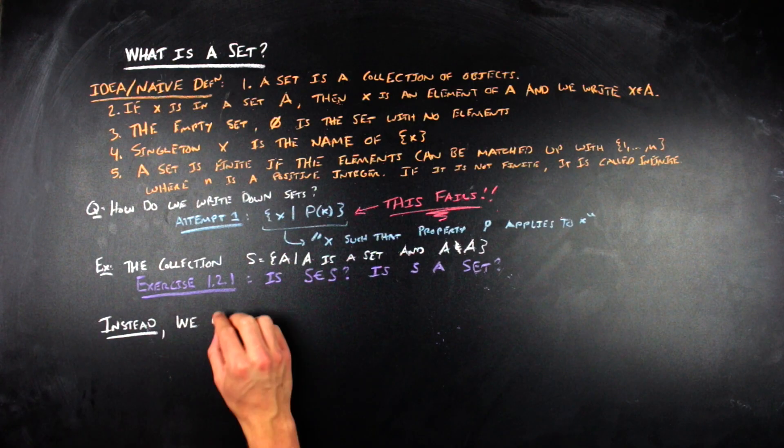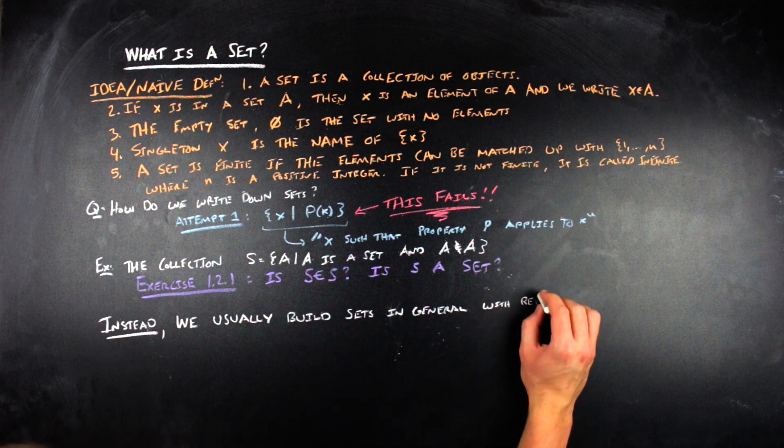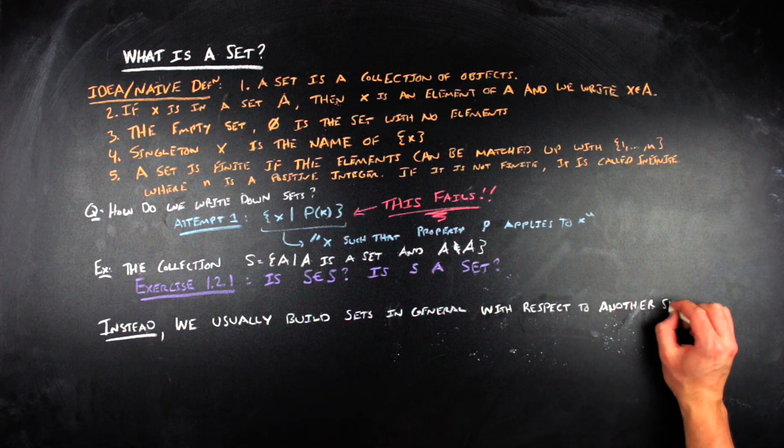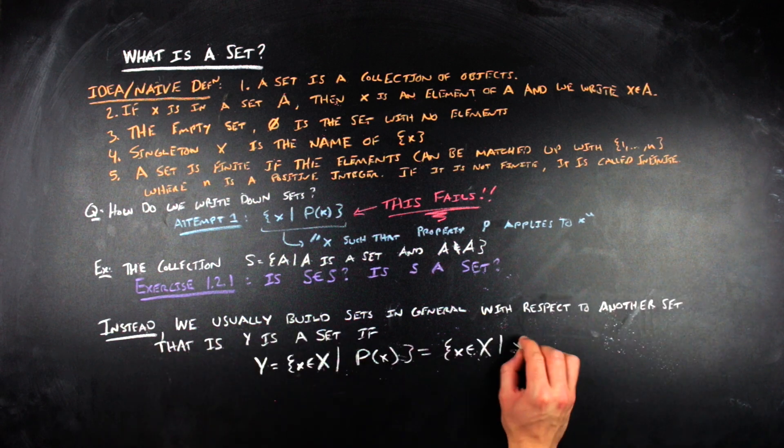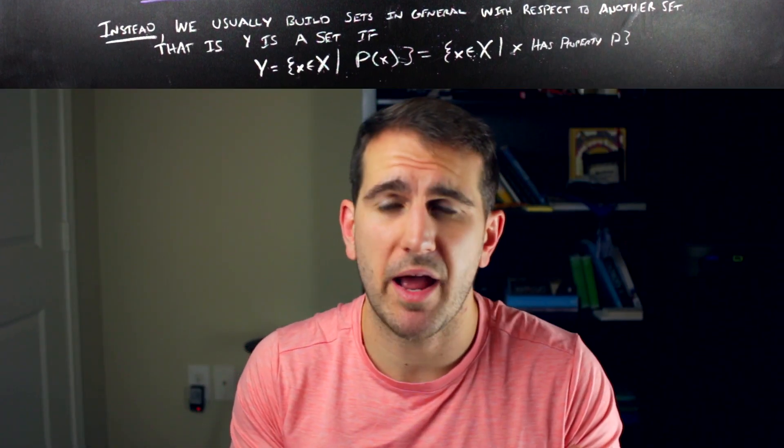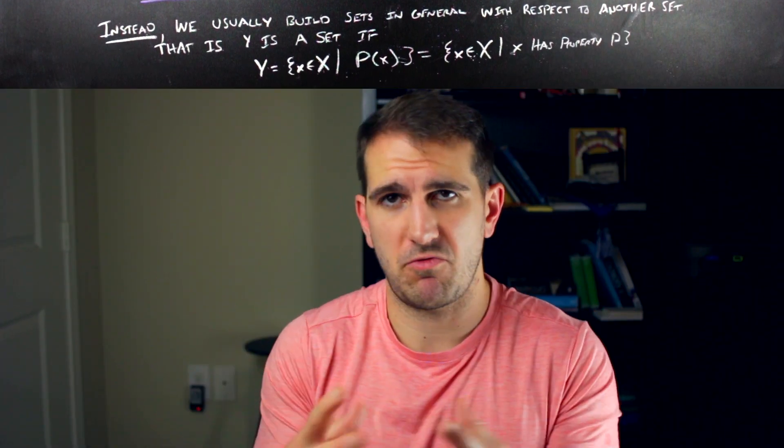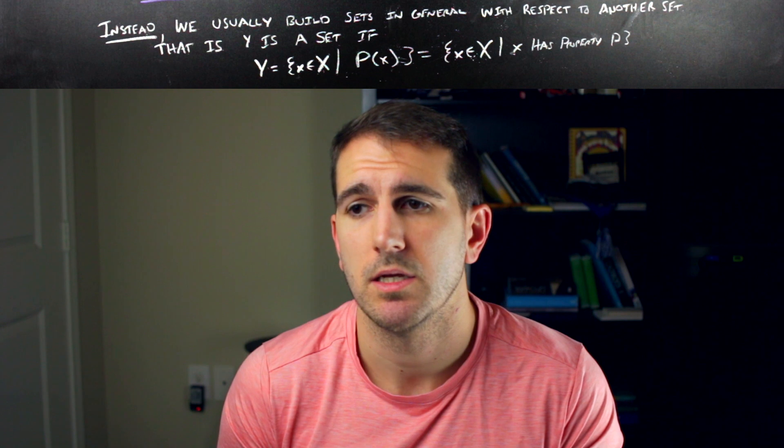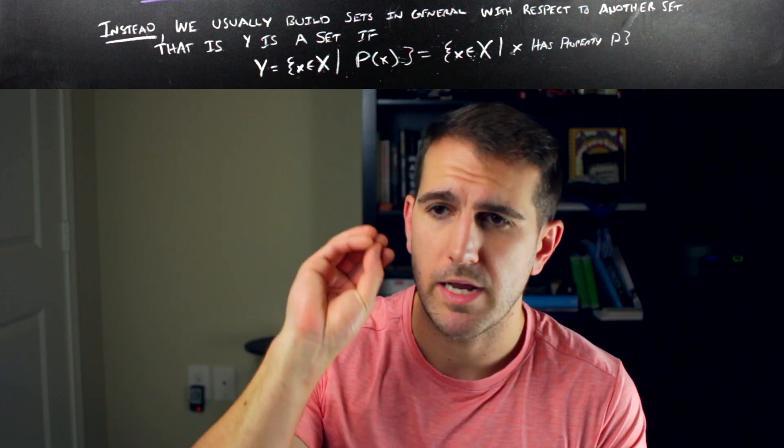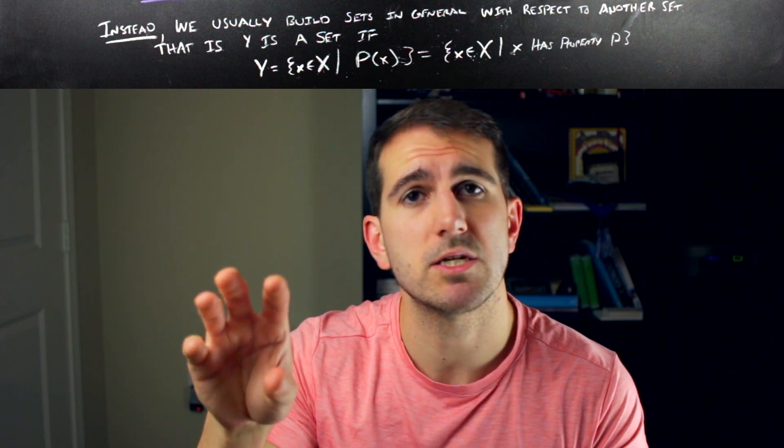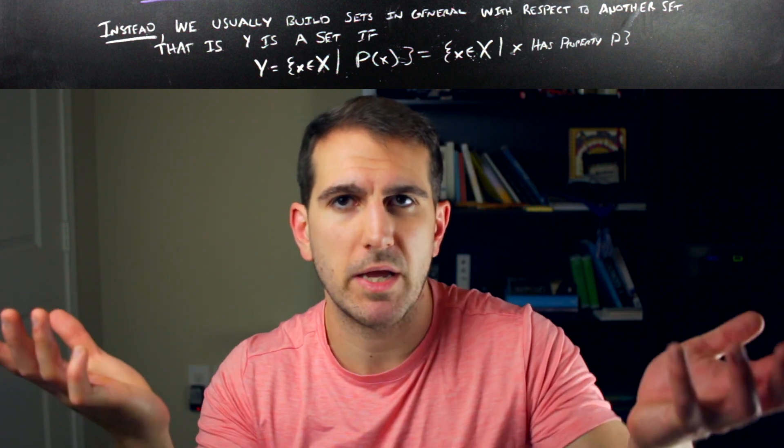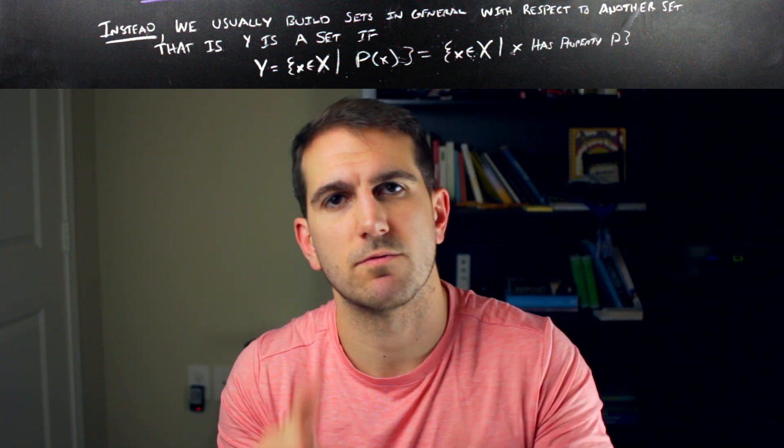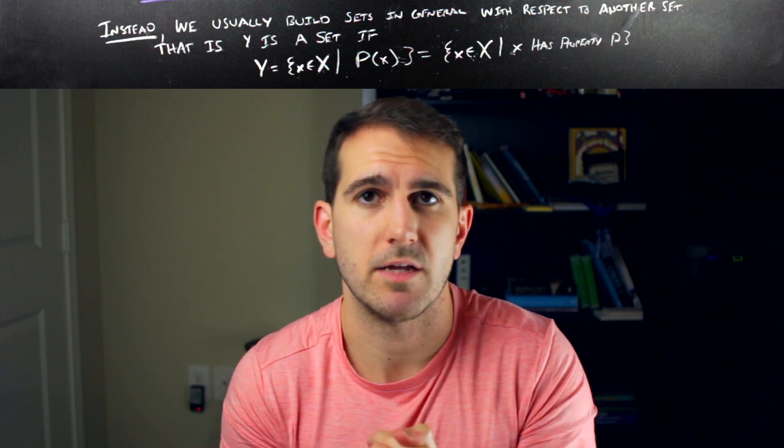So, instead, at least in naive set theory, what we do is we write down the following type of thing, where you're a set if your members come from some set and they fit a particular property, which should feel bad. If you want to do math and you want to do math rigorously, this should feel like not a great definition of how you, or not a great construction of how you build sets. Because, essentially, I'm telling you that if you want to write down a set, you write down something in terms of another set, but you don't know how to write down the other thing rigorously, right?